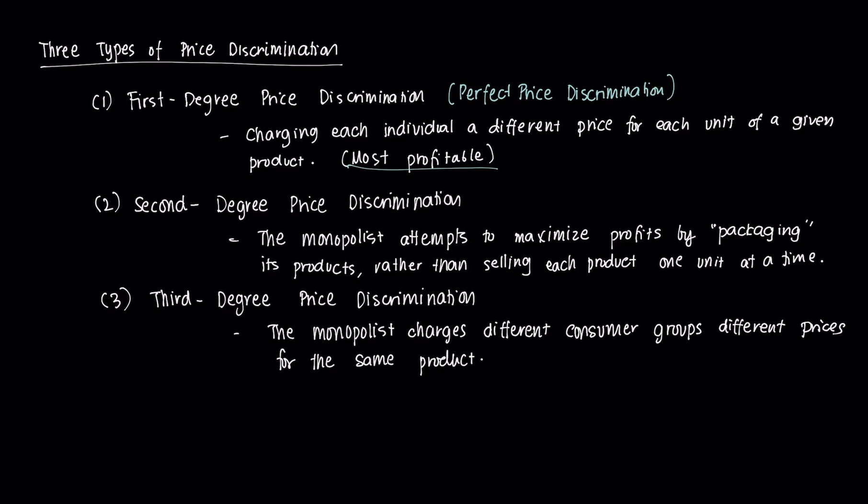The last form is third-degree price discrimination. It occurs when the monopolist charges different consumer groups different prices for the same product. Maybe it charges the business sector more than other sectors of the economy. So it could discriminate based on industry, based on type, or based on classification.